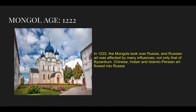In 1222, the Mongols took over Russia, and Russian art was affected by many influences beyond that of Byzantium. Chinese, Indian, and Islamic Persian art flowed into Russia. Forest-centered arches, onion-shaped and heart-shaped domes, blind windows, and niche-like recesses now occurred frequently in Russian architecture.